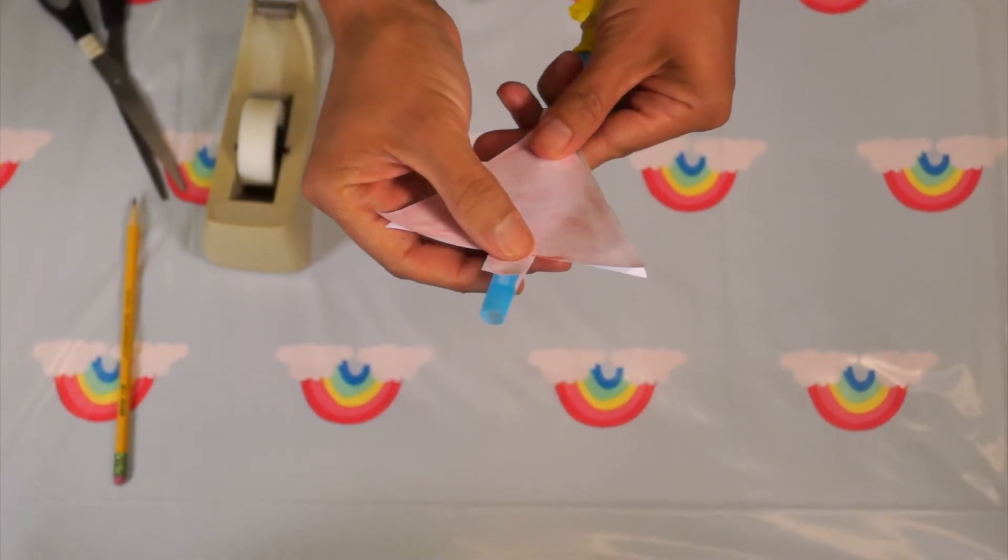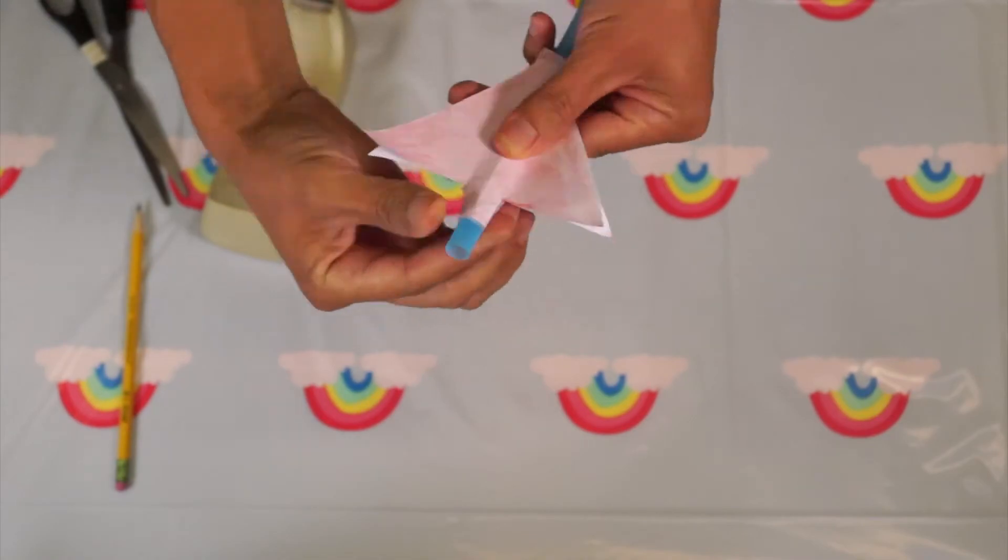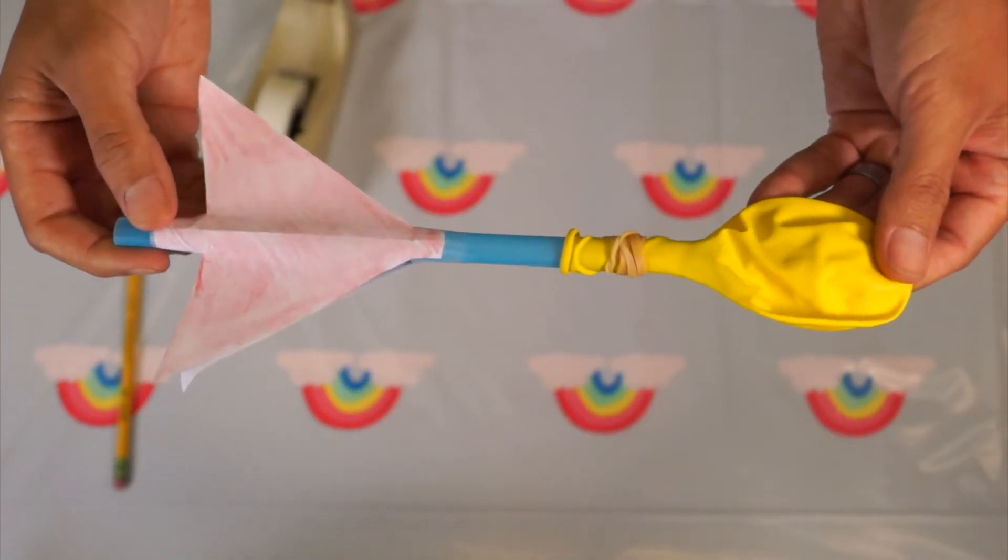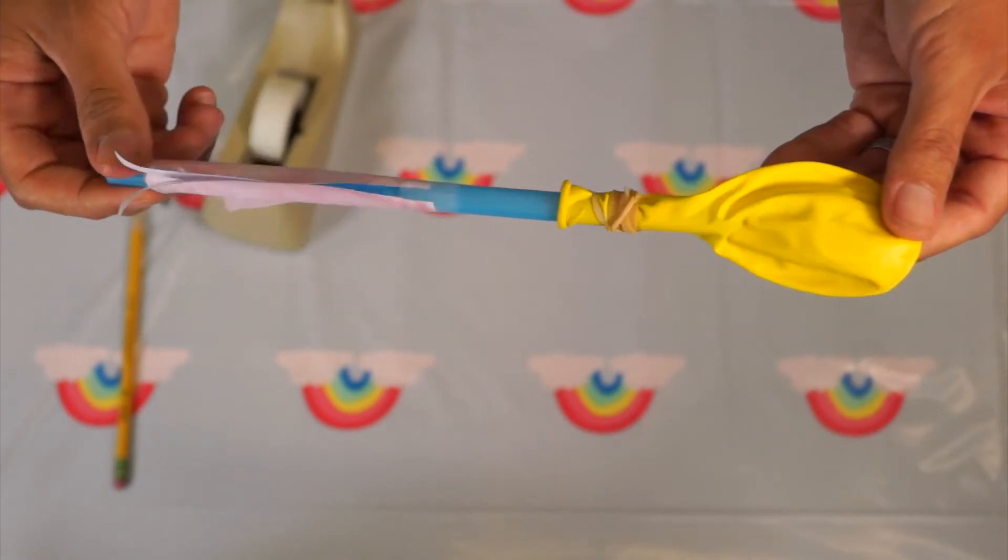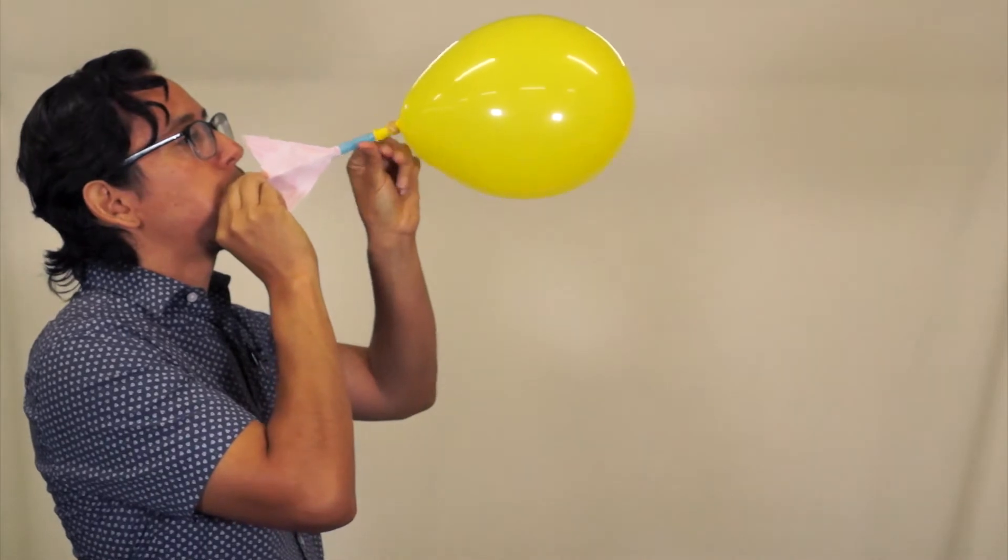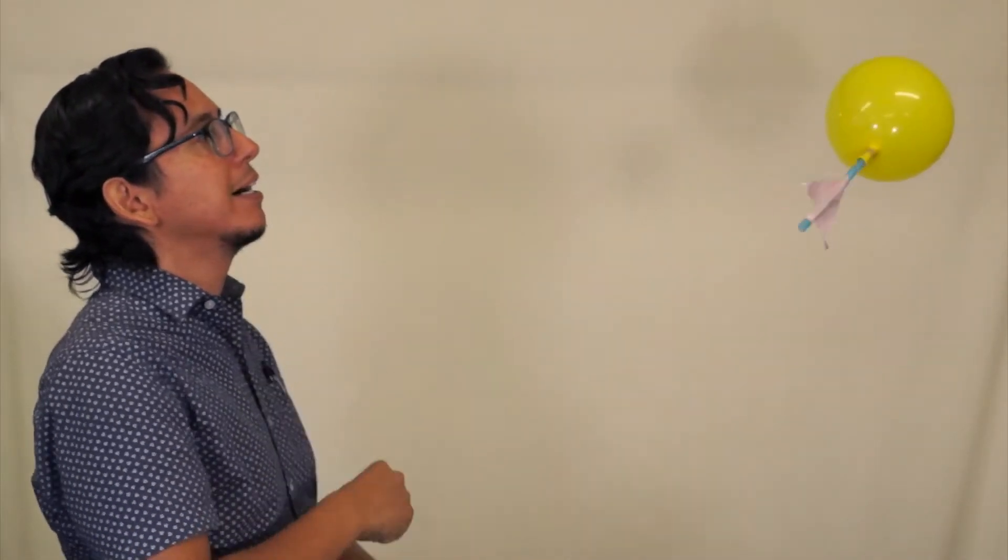You're going to tape the other fin to the other side. Once your fins are secured and you have your balloon on the straw as well, you're ready to blow through the straw. And once your balloon is inflated, let it go.